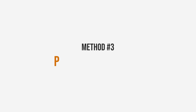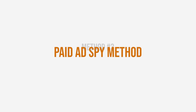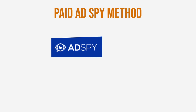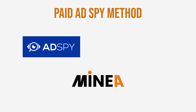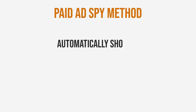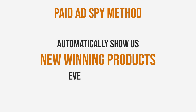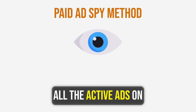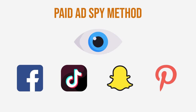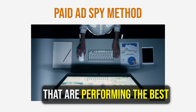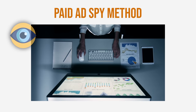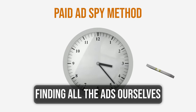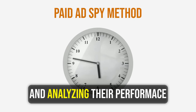Method number three is the paid adspy method. This is basically the same as the first two, but now we use services like adspy.com, Minea, PP Ads, or other tools that automatically show us new winning products every single day. These tools look at all the active ads on Facebook, TikTok, Snapchat, or Pinterest and then identify the ones performing best in terms of views, shares, likes, and comments. For example, on Minea we can go to Facebook ads, set filters to advanced, set creation date to the last 30 days, language to English, e-com platform to Shopify, and likes to a minimum of 500. This saves tons of time finding and analyzing ads ourselves.